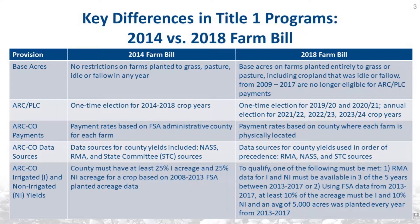Now I'll discuss some of the key differences in Title I commodity programs in the 2014 and 2018 Farm Bills. Under the 2018 Farm Bill, farms planted entirely to grass or pasture, including cropland that was idle or fallow from 2009 to 2017, are no longer eligible for ARC and PLC payments. If one acre of one covered commodity was planted in any year between 2009 to 2017, the farm will remain eligible for ARC and PLC payments.